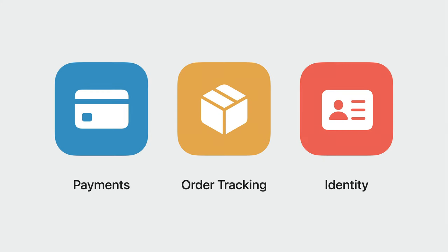Wallet and Apple Pay encompasses a wide range of features and functionality — barcode passes, transit cards, car keys, and more. These are all important parts of our ecosystem, but today's focus will be on three areas: payments, order tracking, and identity.